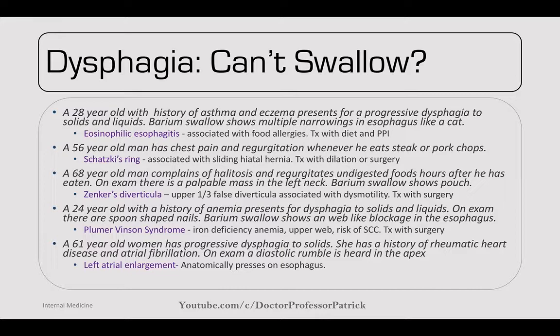A 67-year-old man complains of halitosis and regurgitates undigested food hours after eating. On exam there's a palpable mass in the left neck. Barium swallow shows a pouch. This is a Zenker's diverticulum — upper one-third, a false diverticulum that does not contain all four mucosal layers, associated with dysmotility. Think of the esophagus contracting on both sides of food and forcing it into the neck, creating a pocket. Treat with surgery.